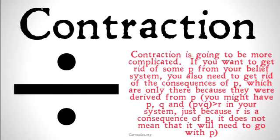Next up is contraction, and contraction is going to be more complicated. If you want to get rid of some P from your belief system, you also need to get rid of the consequences of P — or at least the consequences of P which were only derived from P. For example, you might have P, Q, and 'Q implies R' in your system, and via the consequence operation have R. But just because you're removing P, it doesn't necessarily mean you need to remove R, because you still have Q in your system, so you might want to hold on to R.